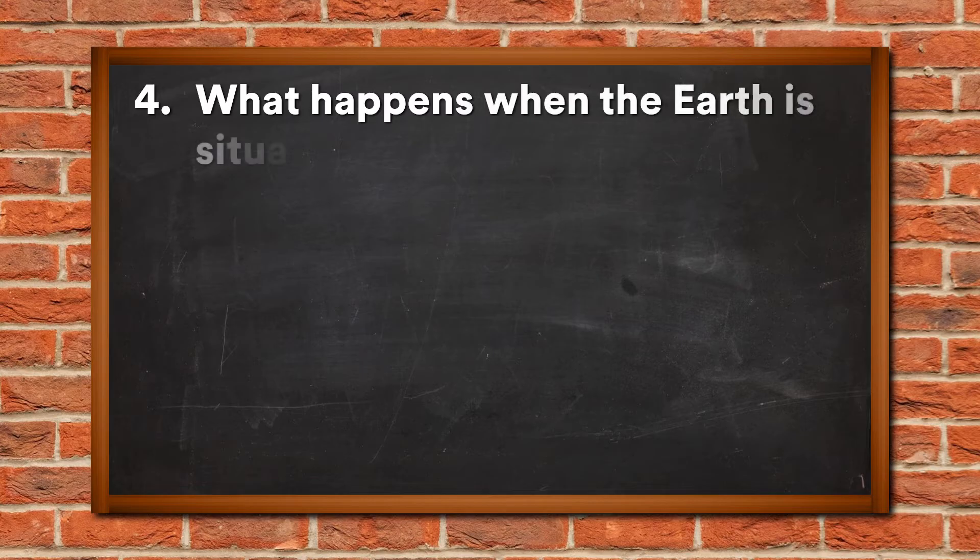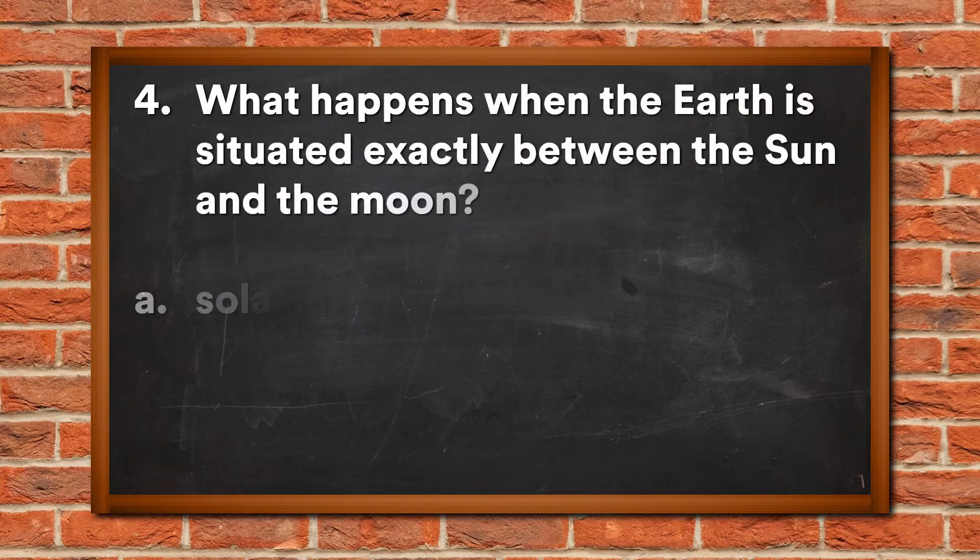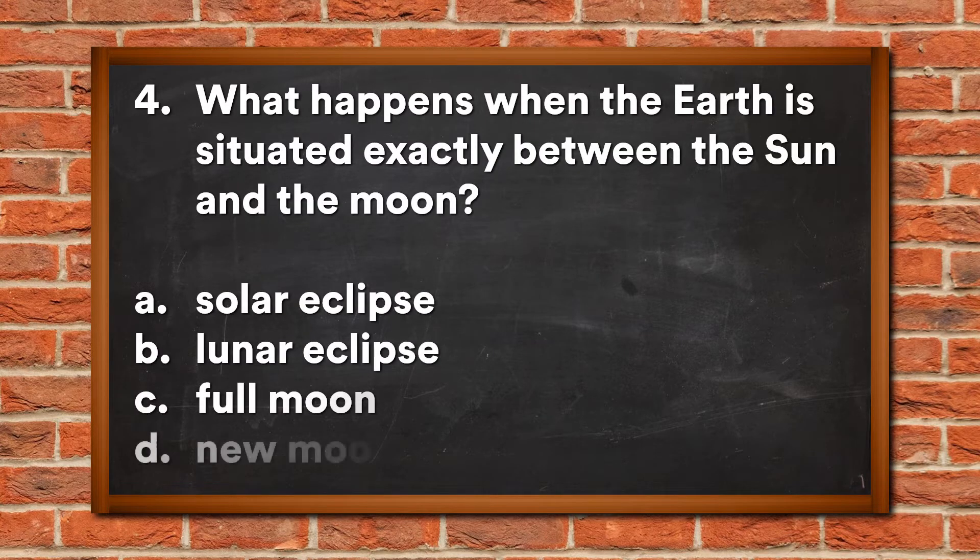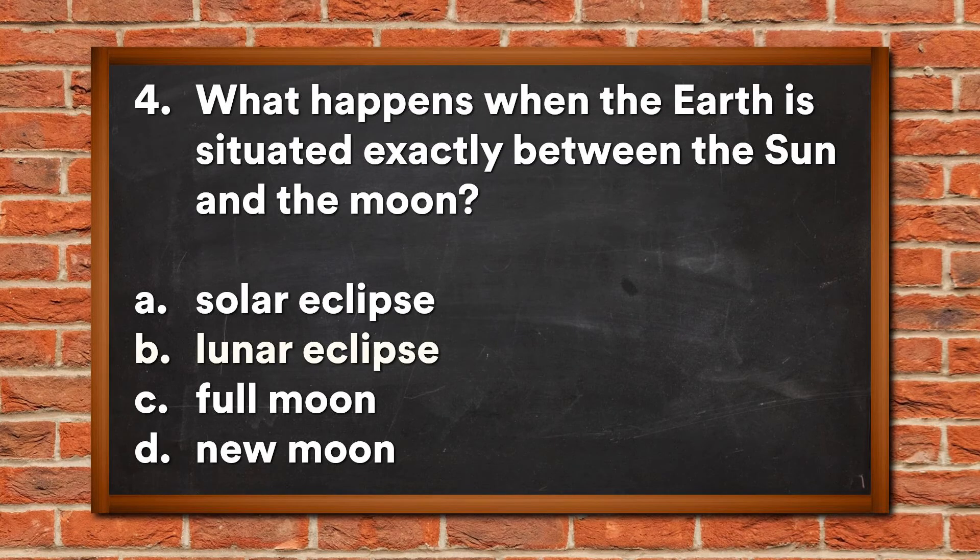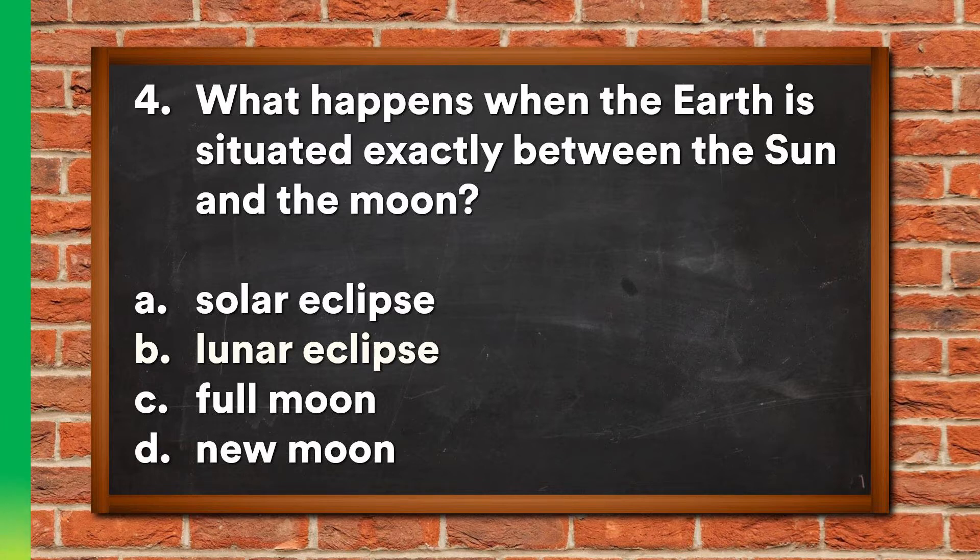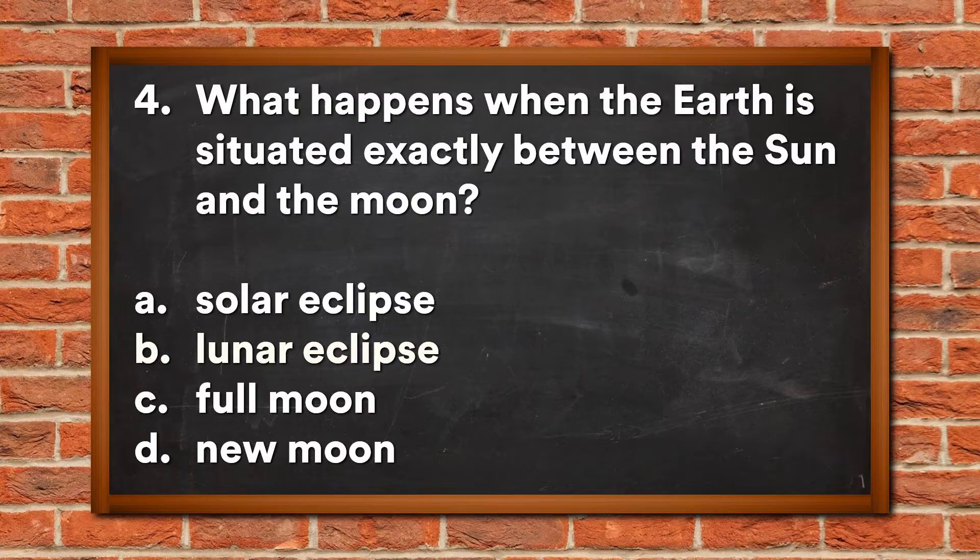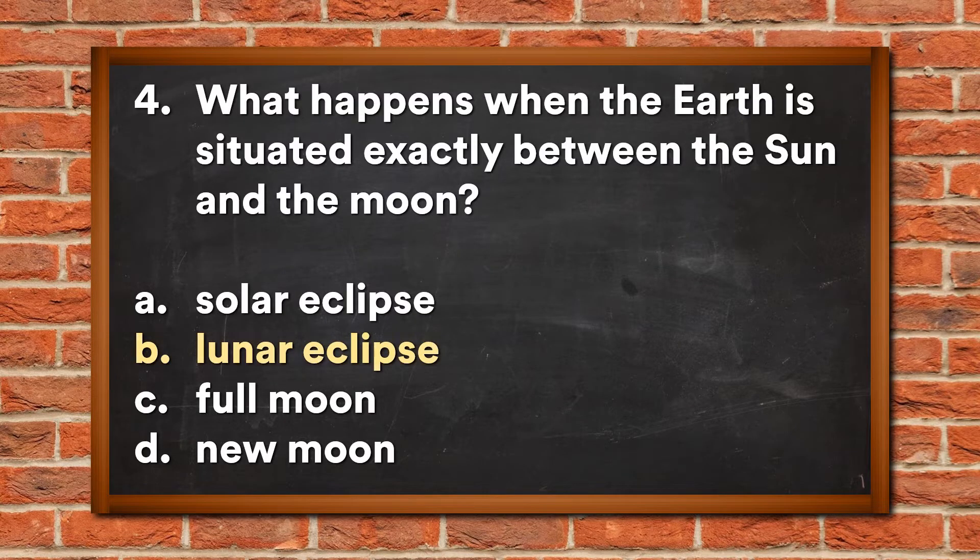Question 4: What happens when the earth is situated exactly between the sun and the moon? A. Solar eclipse, B. Lunar eclipse, C. Full moon, D. No moon. The answer is B, Lunar eclipse.